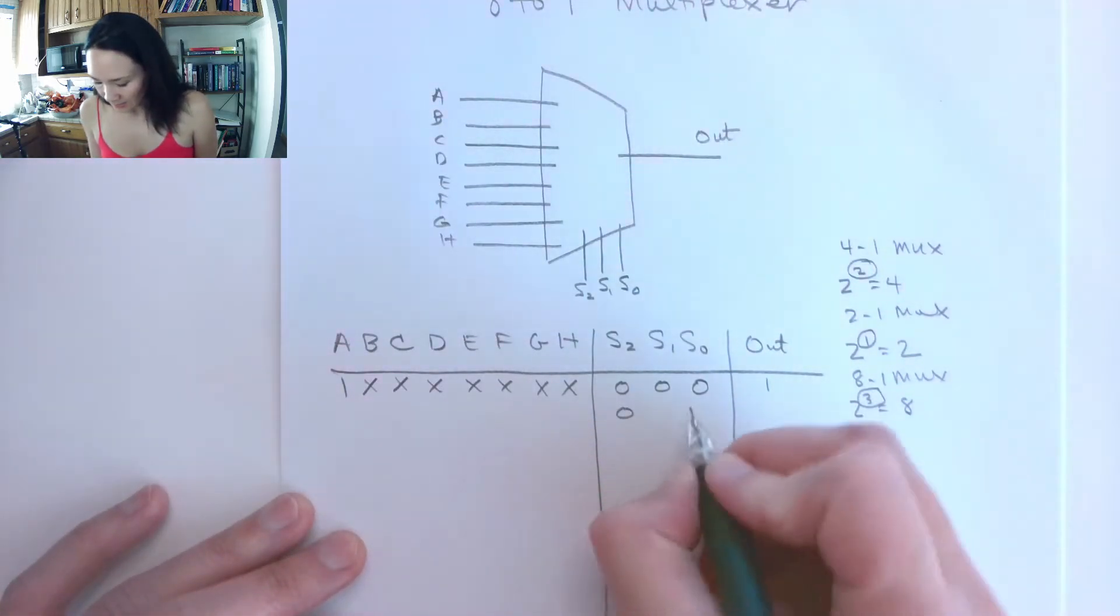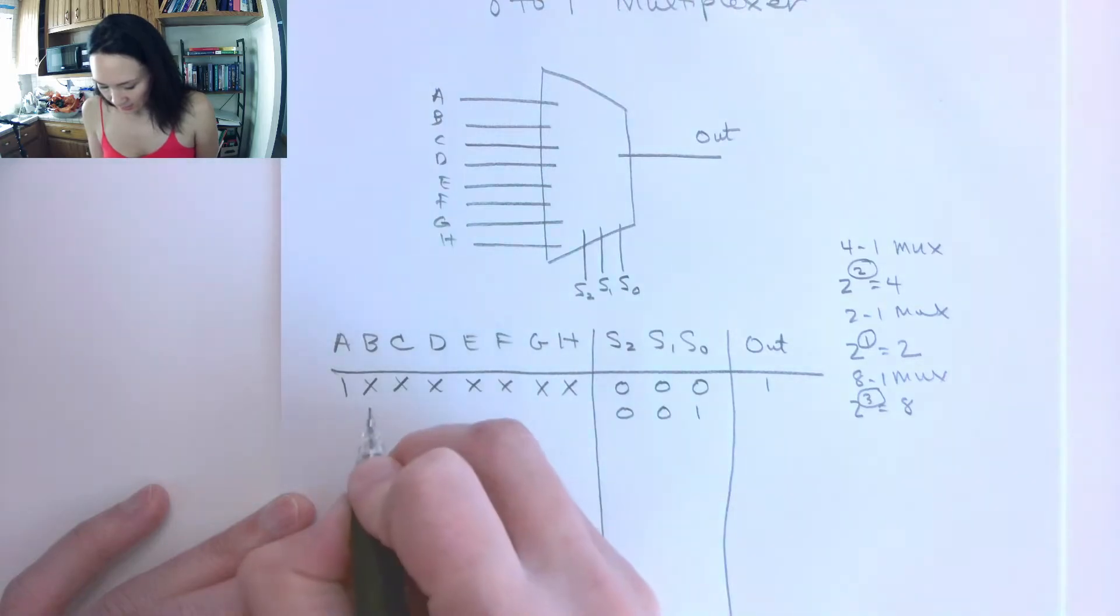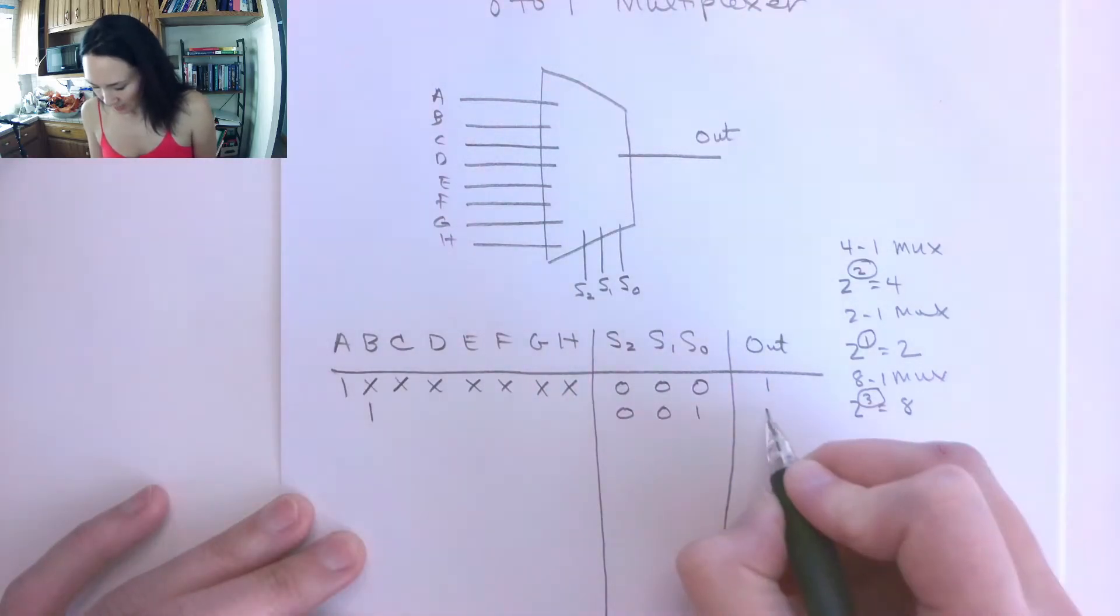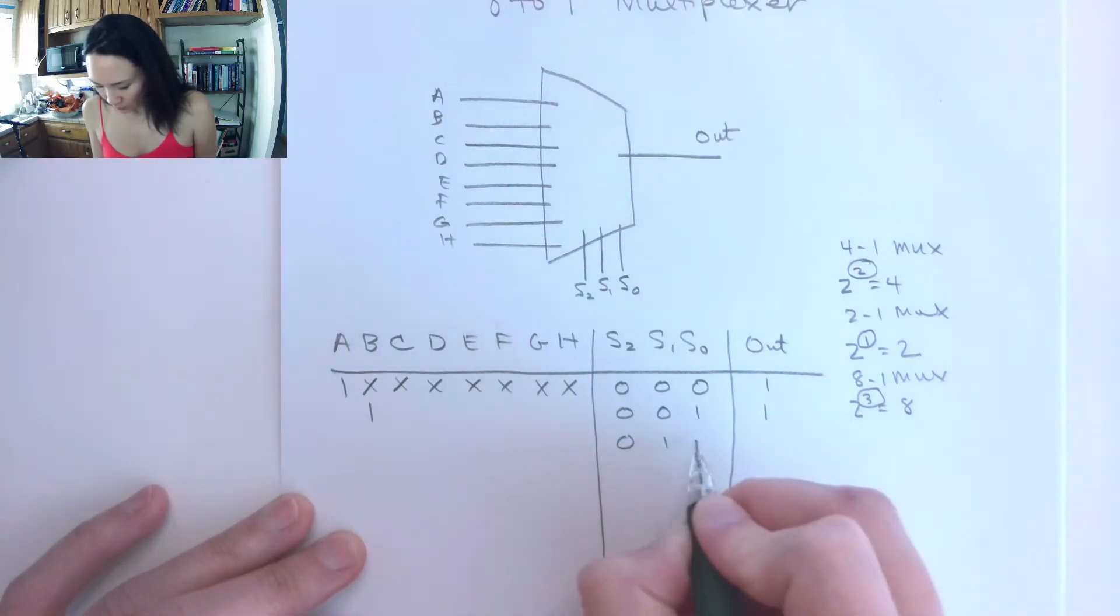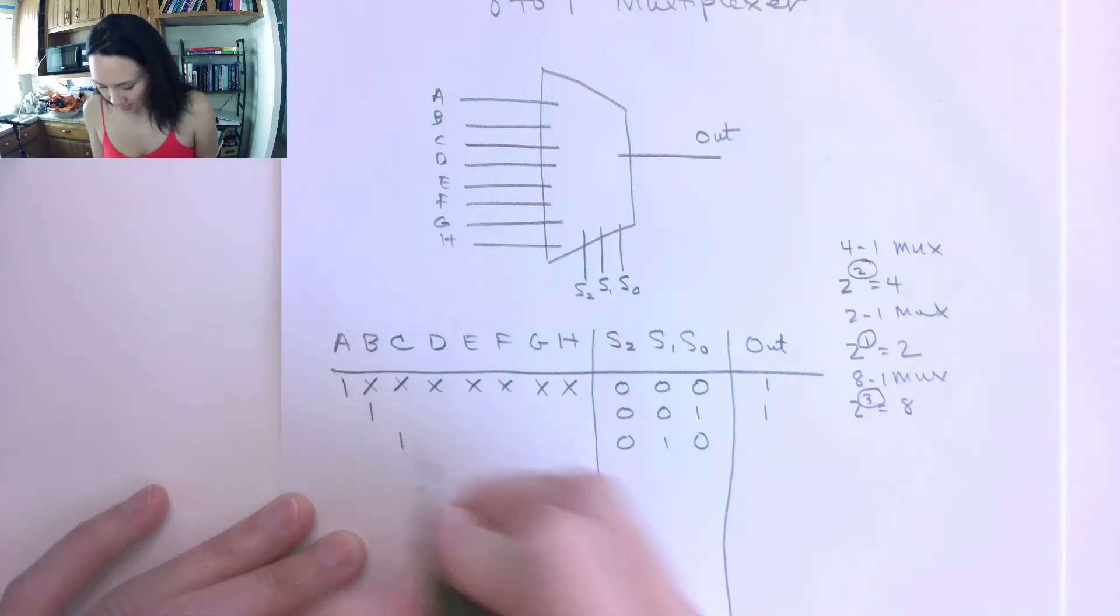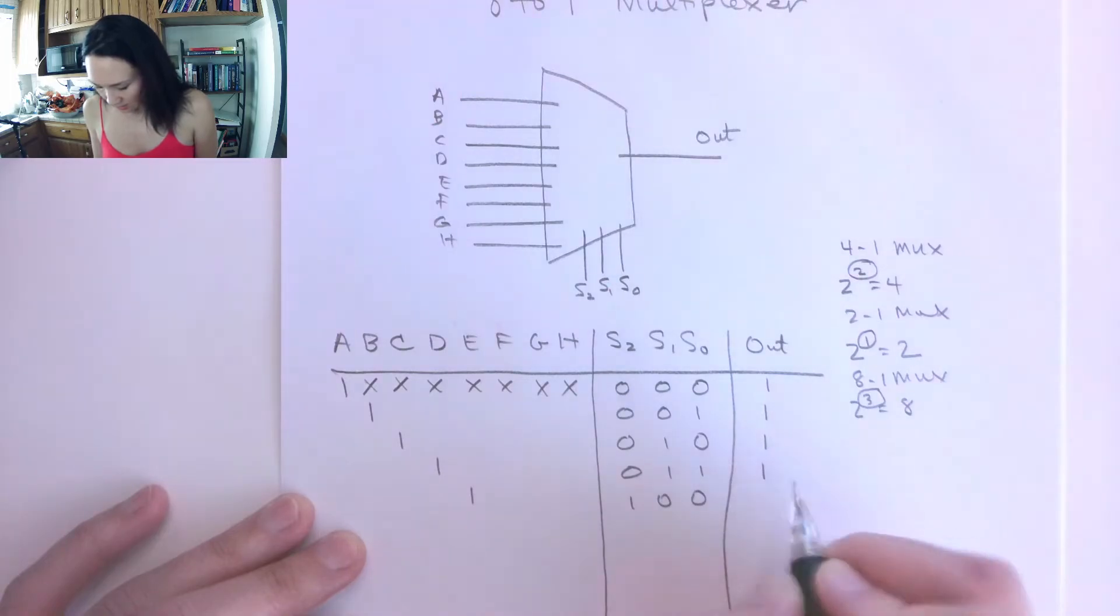Okay, great. So then the next case, 0, 0, 1, is going to grab B and pipe it to the output. 0, 1, 0 is going to grab C and put it to the output. 0, 1, 1 is going to grab D and put it to the output. 1, 0, 0 collects E, and so on.